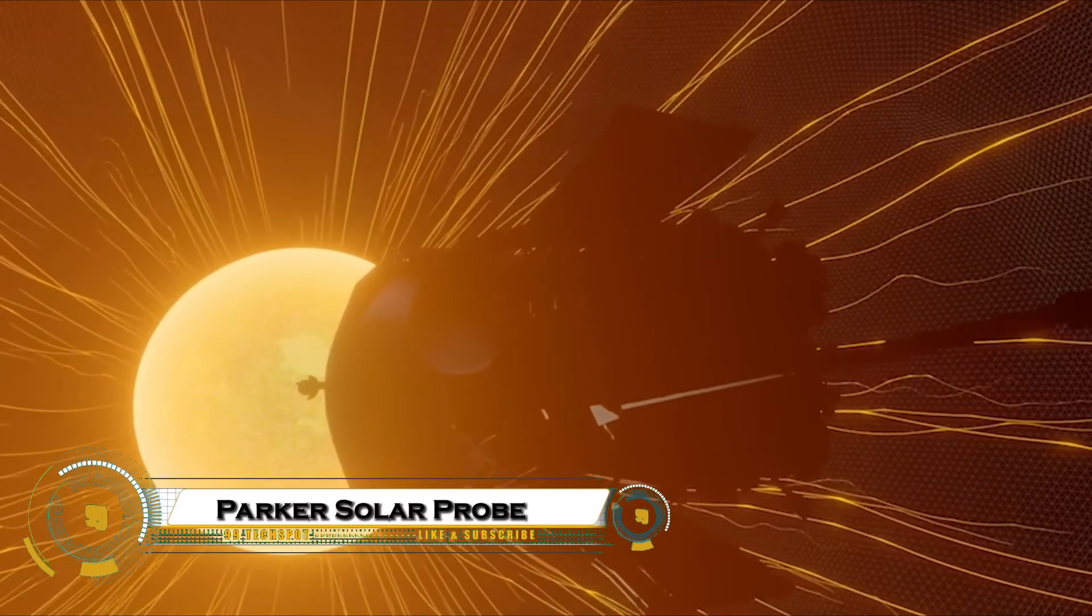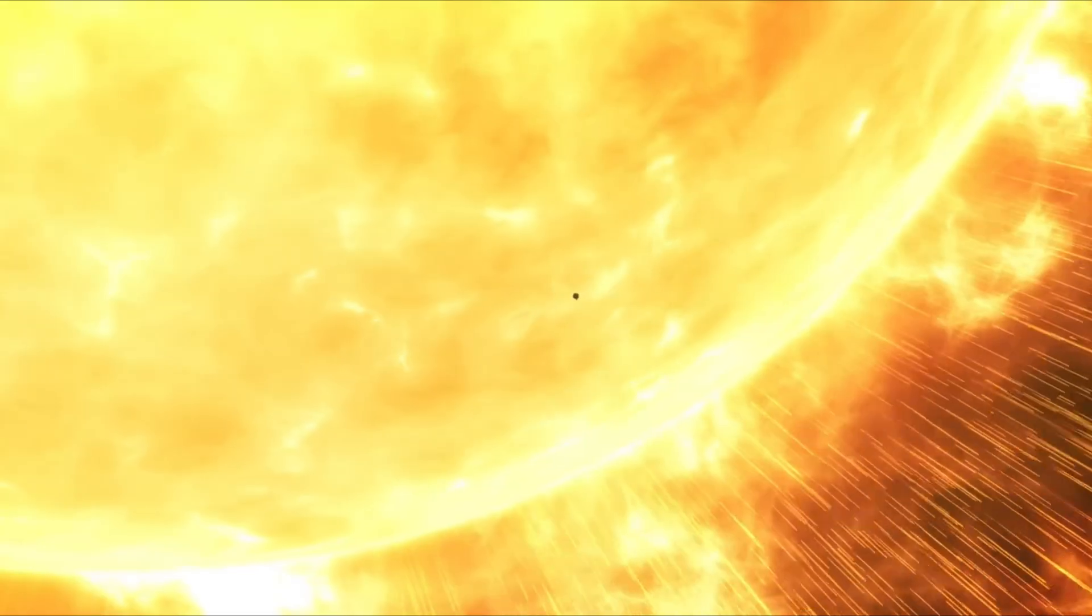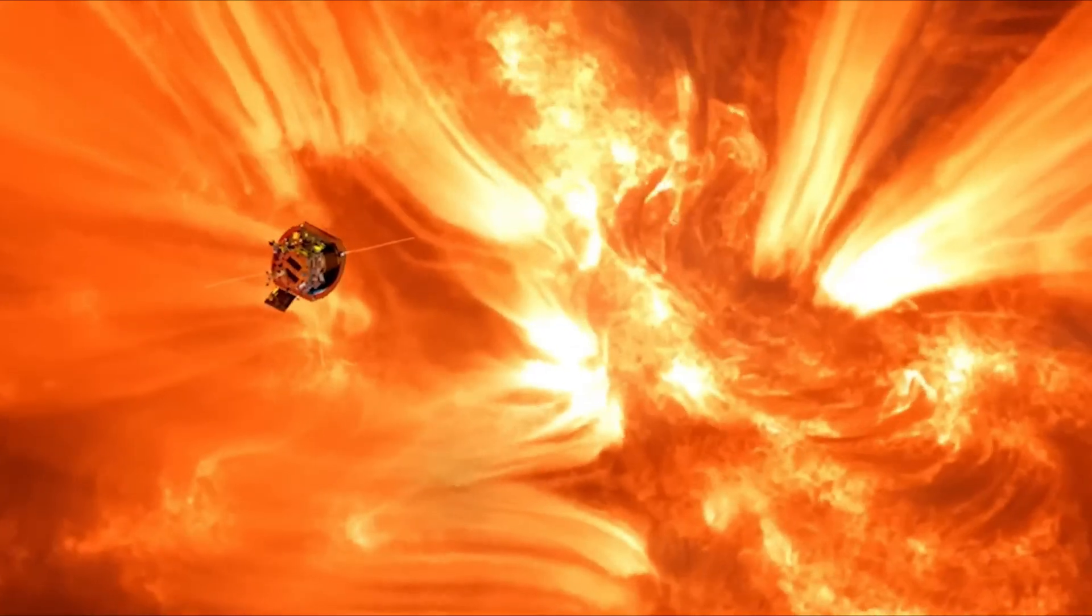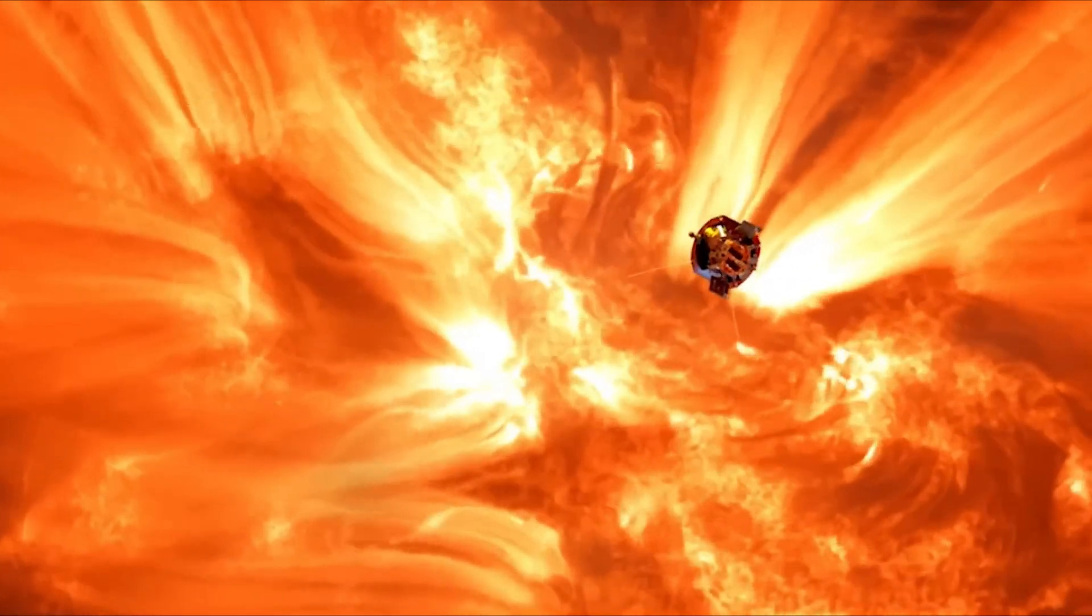The Parker Solar Probe just sent back the most incredible images ever, the closest photos of the sun from just 3.8 million miles away, where temperatures hit millions of degrees. These aren't typical fuzzy images.